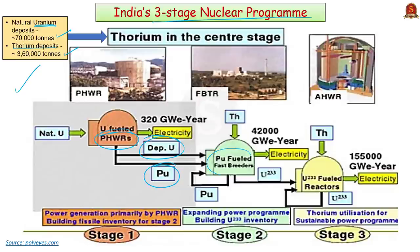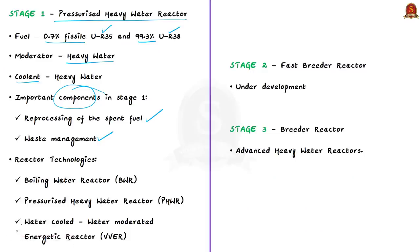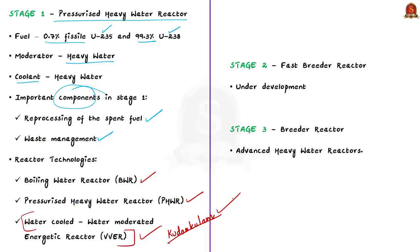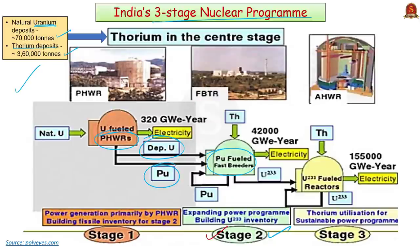Fast breeder reactors constitute the second stage. India has also set up a water-water energetic reactor (VVER) type nuclear power plant based on Russian technology, located at Kudankulam in Tamil Nadu. The VVER reactors belong to the family of pressurized water reactors, and this VVER is a new technology used in the Stage 1 process. The second stage involves setting up several fast breeder reactors, which would use a mixture of plutonium and reprocessed spent uranium containing plutonium-239 from the first stage.